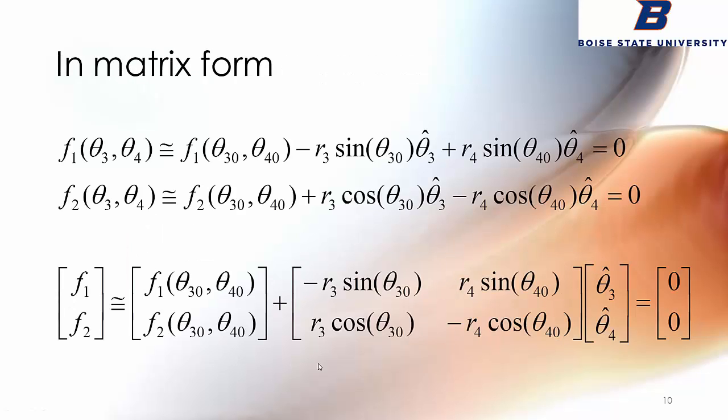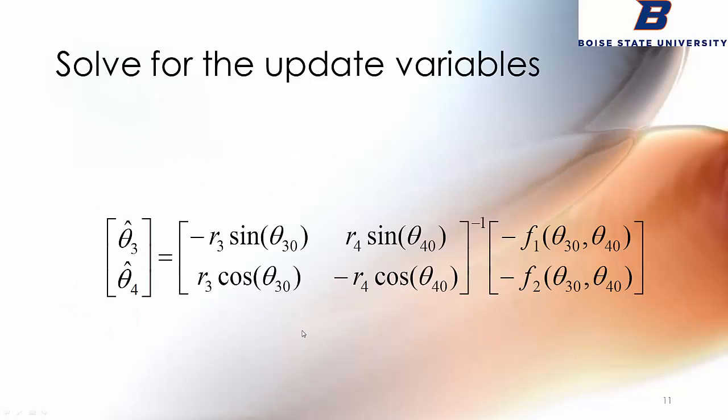The next step is to solve for these update variables, theta 3 hat and theta 4 hat. You get this equation: theta 3 hat, theta 4 hat is equal to this two by two matrix inverted, and that's what the minus one means, times this vector of the functions with minus signs in front of them. Simple matrix multiplication. In a MATLAB environment, this is a single line of code. It's really straightforward. This matrix of the partial derivatives has a name in mathematics parlance - it's called the Jacobian matrix, and it's used in a lot of different mathematical techniques.